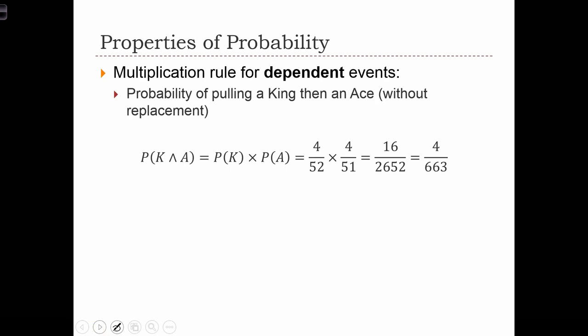What about the multiplication rule for dependent events? For example, what if we were to wonder what the probability of pulling a king and then an ace out of a deck was, but in between these steps, we don't replace the king back into the deck? In this case, we have to take into consideration the fact that we've reduced the number of cards in the deck. So here we have the probability of king times the probability of ace, but the probability of retrieving an ace after we've taken the king is no longer 4 in 52. We've removed one card from the deck, so we have to change the denominator to 51. After we calculate these probabilities, we see that the probability of this composite event is 4 out of 663.